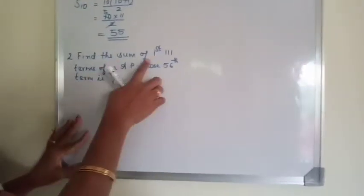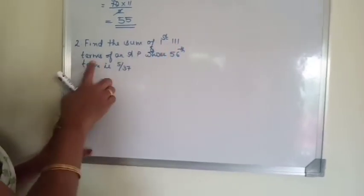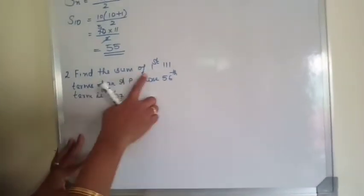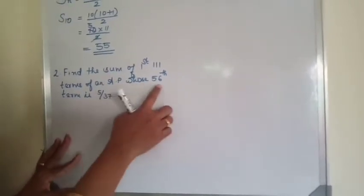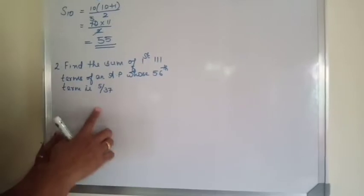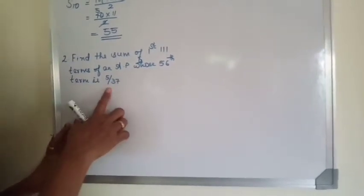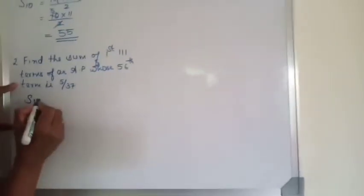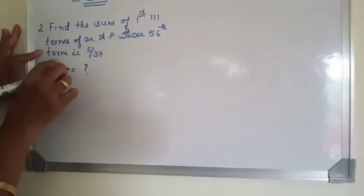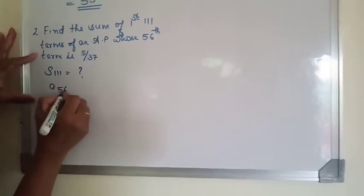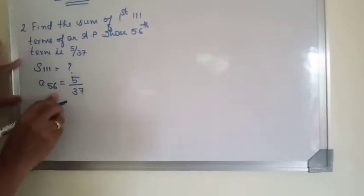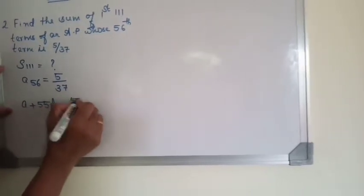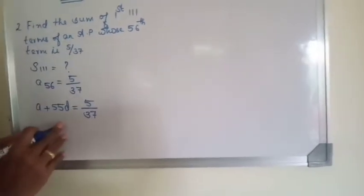Next question: find the sum of first 111 terms of an AP whose 56th term is 5/37. We have to find the sum of 111 terms of an AP whose 56th term is 5/37. The AP is not given, only the 56th term is given and D we don't know. So A₅₆ = A + 55D = 5/37. We will leave this as equation (1).